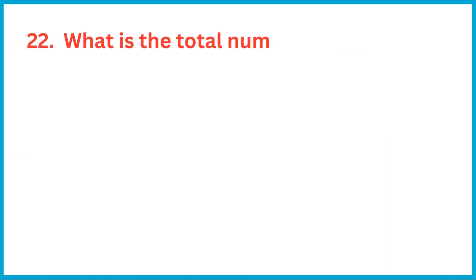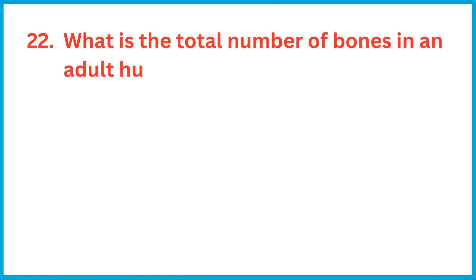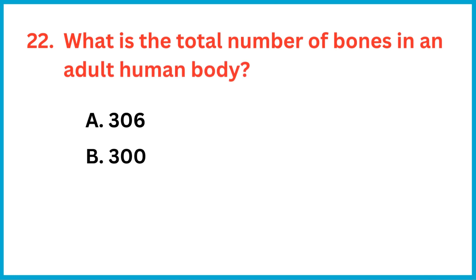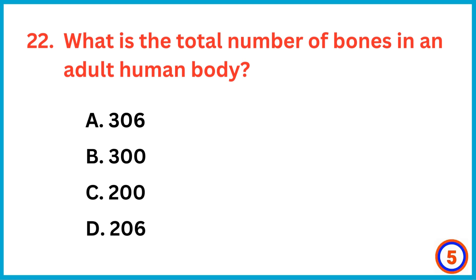What is the total number of bones in an adult human body? The correct answer is option D: 206.